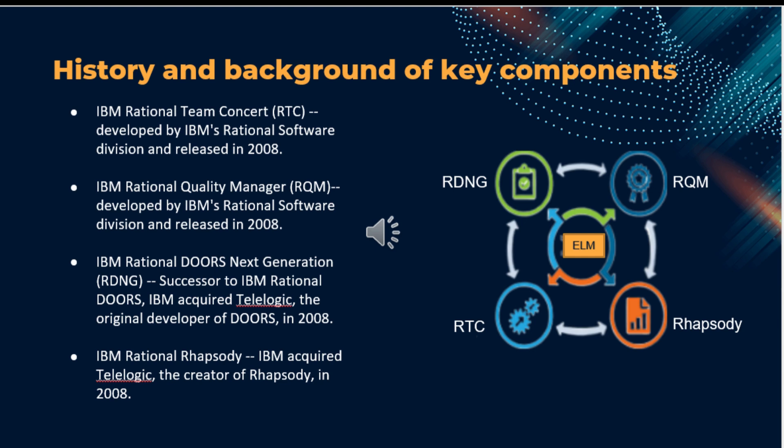IBM Rational Rhapsody is a modeling and design tool for system and software engineering. IBM acquired TaylorLogic in 2008, who developed Rhapsody. So Rhapsody became a vital component to address the modeling and design aspects of the development lifecycle.